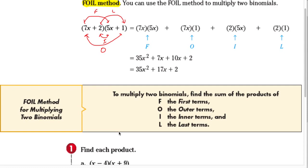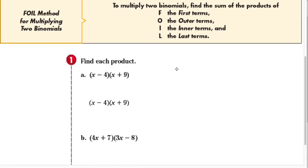The FOIL method does not work with a trinomial or a monomial times a polynomial — it only works with two binomials. Now let's use FOIL to find the product of (x−4)(x+9). Using the FOIL method: first terms are x and x, outer terms are x and 9.